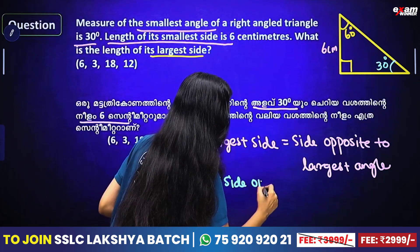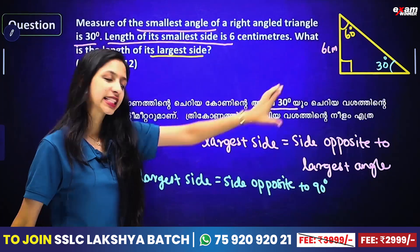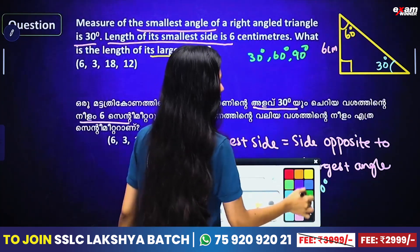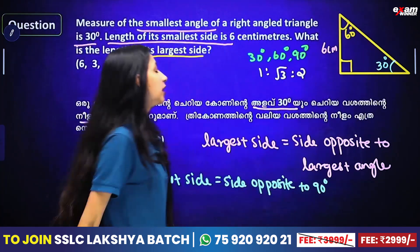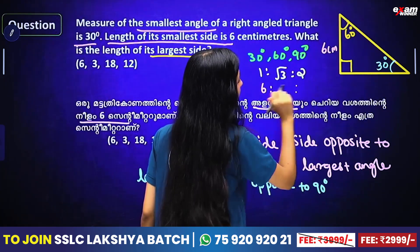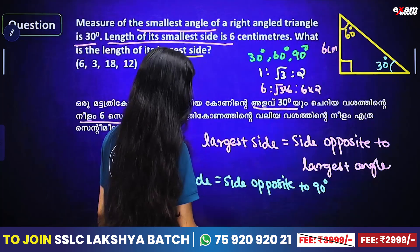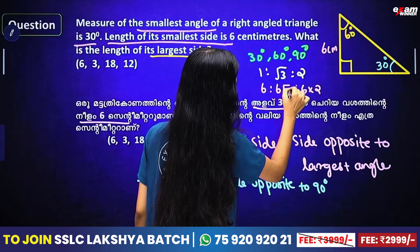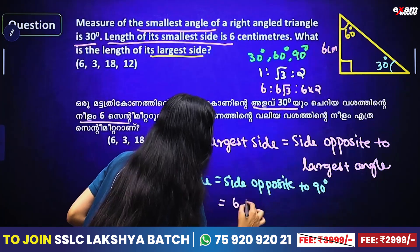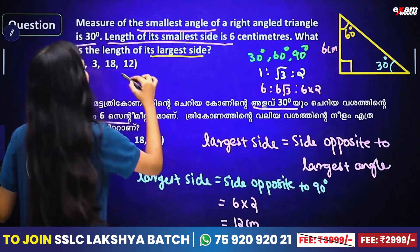The side is opposite to 90 degrees. Now we can measure: it is 6 cm for 30 opposite, and 60 and 90 degrees. The ratio is 1 : root 3 : 2. The 30 opposite is 6, so the 90 opposite is 2 multiplied by 6. That is 12. The answer is 12.